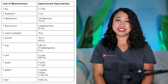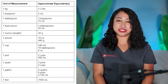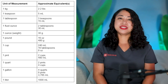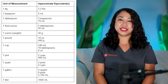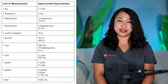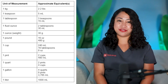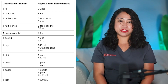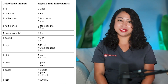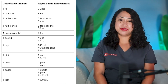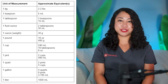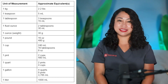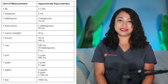The following chart shows each unit of measurement and their approximate equivalent values. One kilogram is equal to 2.2 pounds. One teaspoon is equal to 5 milliliters. One tablespoon is equal to 3 teaspoons or 15 milliliters. One fluid ounce is equal to 2 tablespoons or 30 milliliters. One ounce in weight is equal to 30 grams.